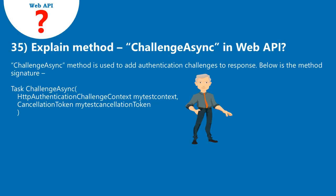Question 35: Explain the method ChallengeAsync in Web API. ChallengeAsync method is used to add authentication challenges to the response. Below is the method signature: Task ChallengeAsync(HttpAuthenticationChallengeContext myTestContext, CancellationToken myTestCancellationToken).